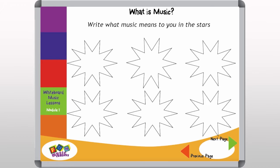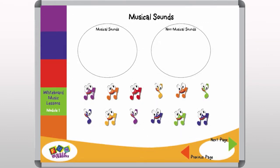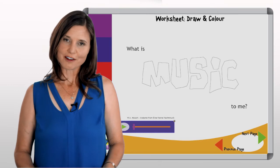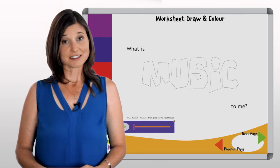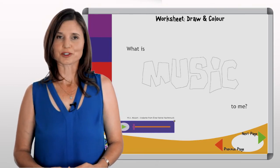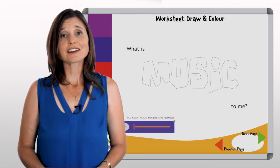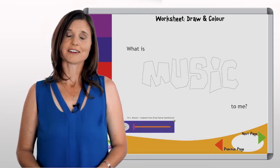I've got a few whiteboard slides to share with you to start discussion: one where they'll just write what music means to them by writing in the stars, one where they'll listen to a variety of different sounds and discuss which ones are musical to them, and then a worksheet where they'll draw freely what music means to them. I think you'll find this a most insightful lesson and you'll get some fascinating responses back from the children, and you'll be able to move on from there with increasing and expanding their awareness of music.